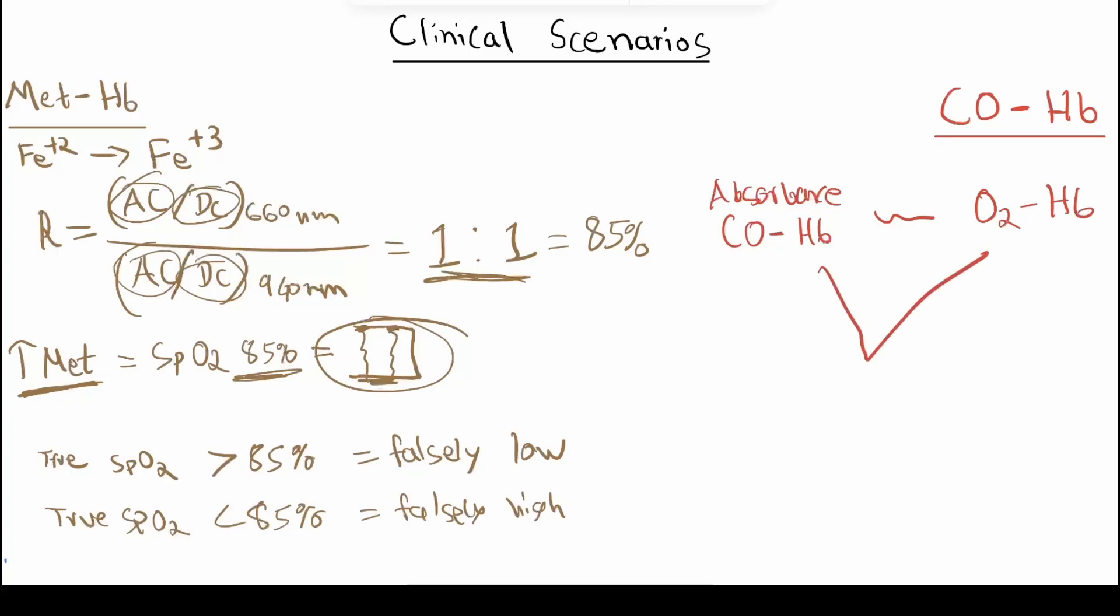What does this mean? This means that the pulse ox is going to get the same ratio of infrared light to red light. If you recall, oxyhemoglobin absorbs more infrared light than red light, and this is essentially the same thing carbon monoxide does. So they'll both report similarly. This means that if, let's say, half of your hemoglobin is bound to carbon monoxide, and in reality, the other half, so your SaO2 in reality is 50%.